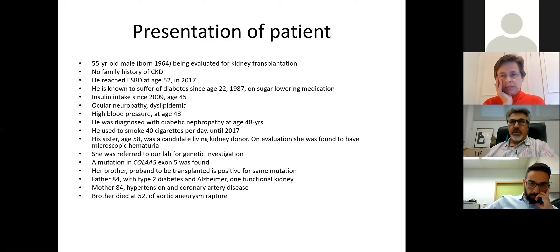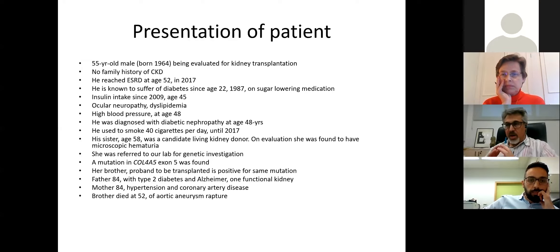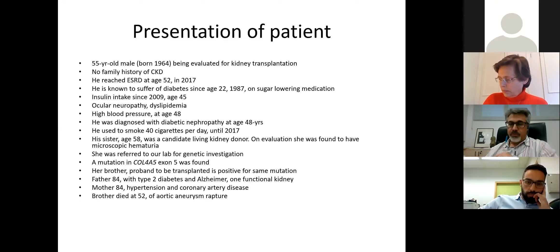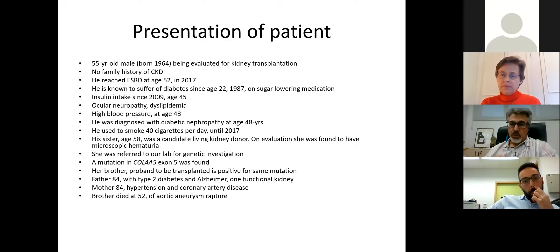Why did I think this is an important case to present? For two reasons. The first reason is that this guy is 55 years old now. We think he ended up on dialysis because of diabetic nephropathy. But to tell you the truth, I am not sure if it's only because of diabetic nephropathy or also because of Alport. With this mutation, being an X-linked disease, we expected him normally to progress to Alport in his early twenties or thirties.